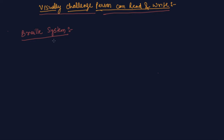In the Braille system, one can read structures — for example, if I write C-A-T, how will C be represented in this system? We draw two columns and three rows of dashes. C is represented by two dots, and A is represented by a single dot.